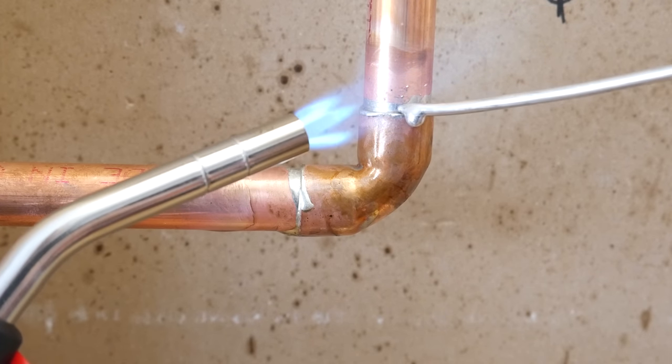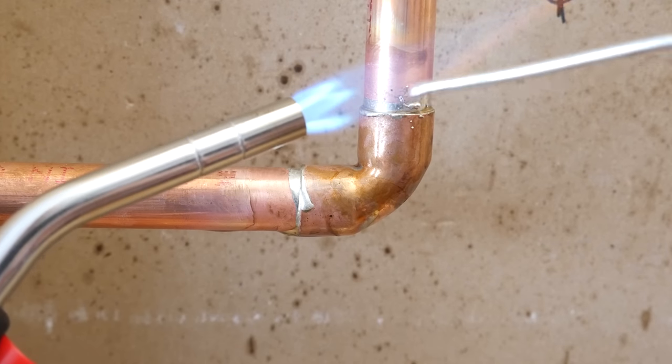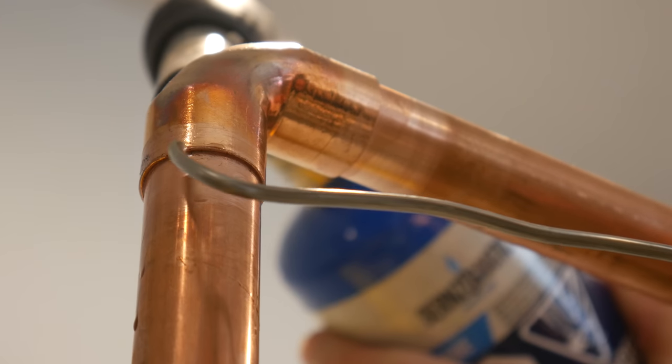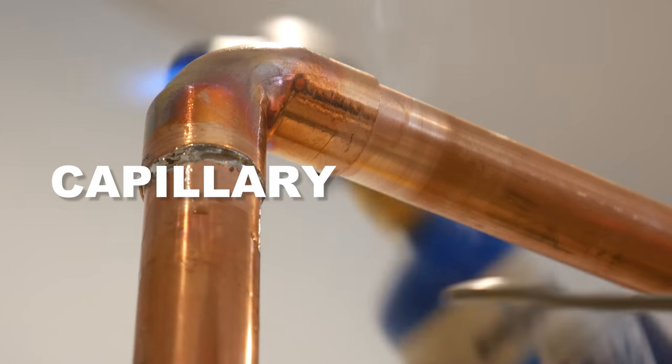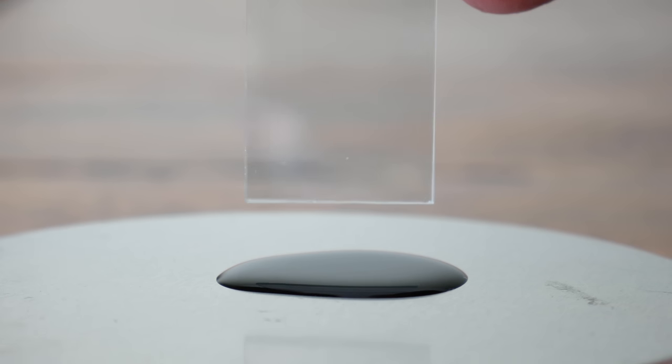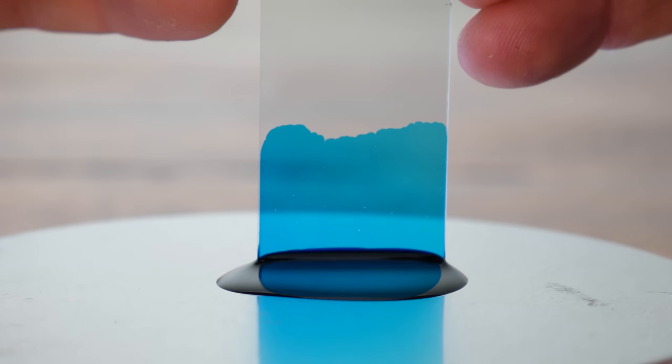Number three is a mistake I see a lot when a beginner solders, and that's to heat the solder and not the actual pipe. To solder a joint properly, the fitting must be heated for a phenomenon called capillary action to take place. Capillary action, when soldering copper pipes, is what ensures that the joint is entirely filled.